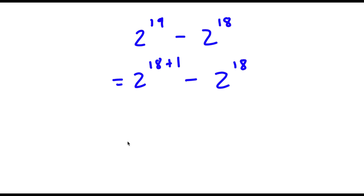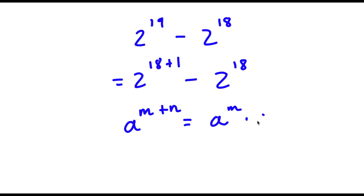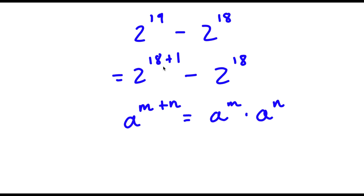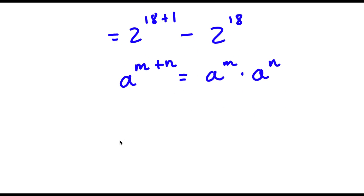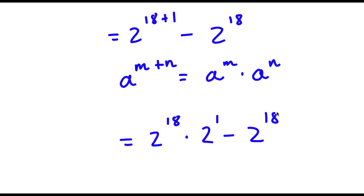Now, if I have something in the form a to the power of m plus n, this is the same thing as a to the power of m times a to the power of n. So in this case, 2 to the power of 18 plus 1 is going to equal 2 to the power of 18 times 2 to the power of 1, minus 2 to the power of 18.